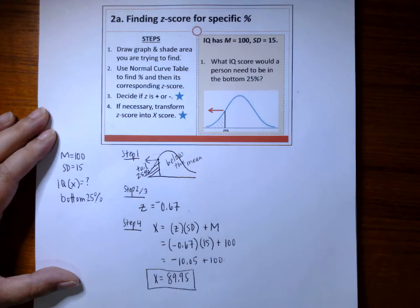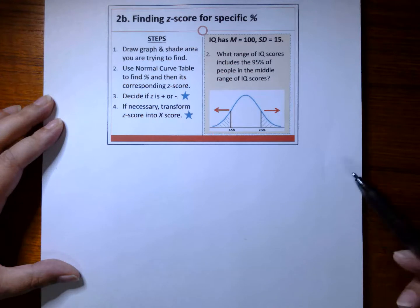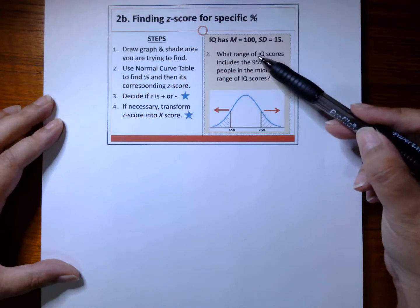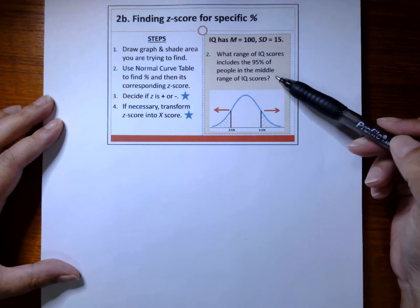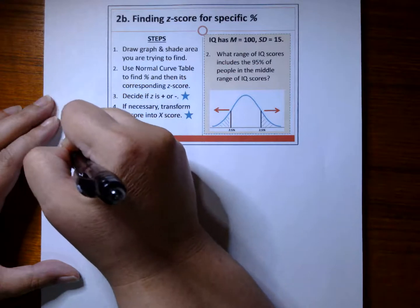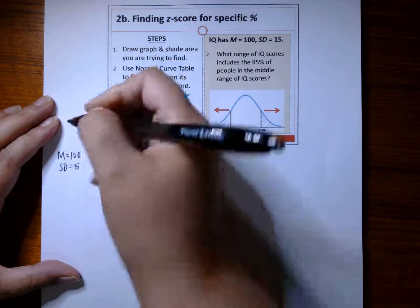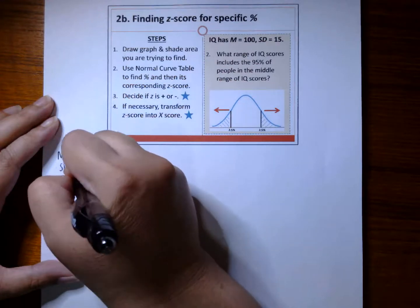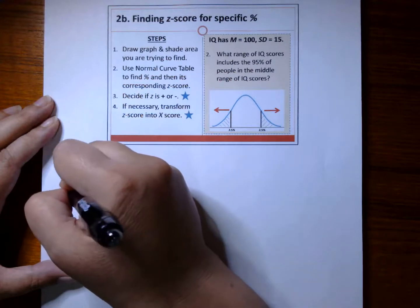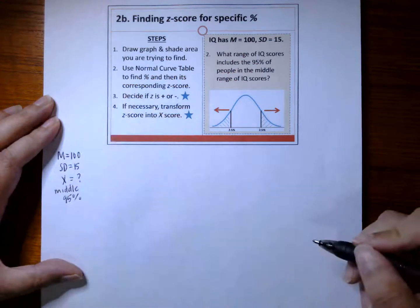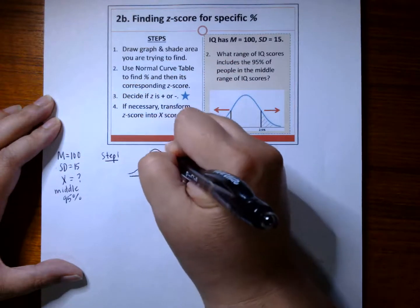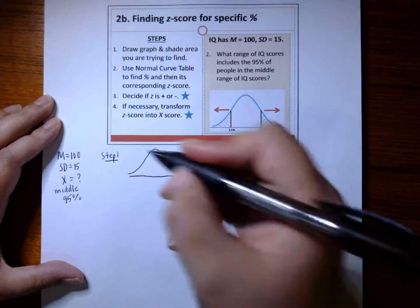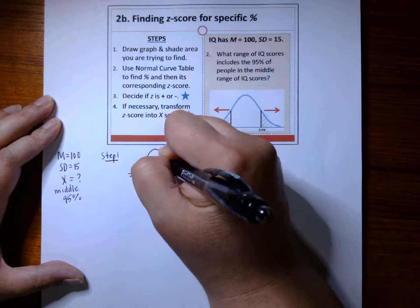I have a bonus question that takes it up a notch. This bonus example is asking for a range of IQ scores. What range of IQ scores includes the middle 95% of people? We have a mean of 100 and an SD of 15, and they're asking for IQ scores representing the middle 95%. Step 1: draw this graph — we draw our normal distribution and shade the middle 95%.